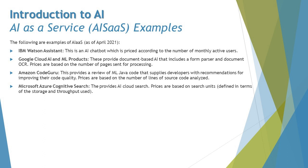Here are some quick examples of AI as a Service available today. IBM Watson Assistant is an AI chatbot priced according to the number of monthly active users. Google Cloud AI and ML products provide document-based AI including a form parser and document OCR, priced based on the number of pages processed. Amazon CodeGuru provides ML-based review of Java code, supplying developers with recommendations for improving code quality, with prices based on the number of lines of source code analyzed.